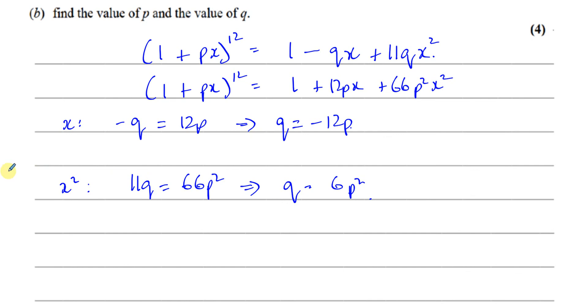So now I can solve these simultaneously. I can, for example, replace the Q with 6P squared. I've got two equations. I can use substitution. So I replace the Q with 6P squared. So I have 6P squared is equal to minus 12P.